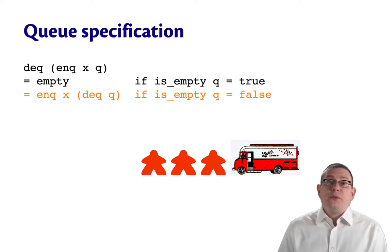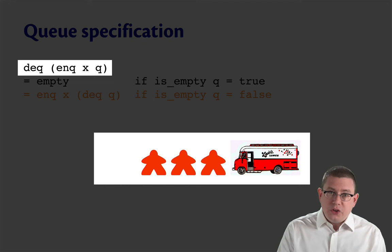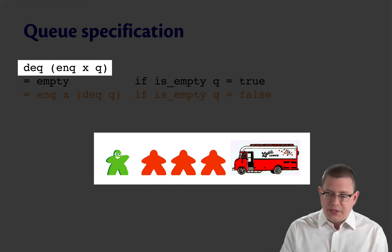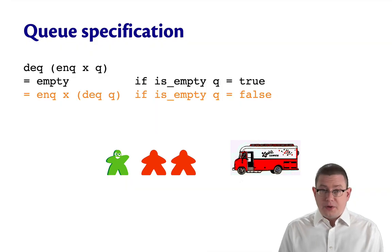But what if there's people in the queue already? So it's not empty. Then if we enqueue you, you're at the back of the line waiting for your food, and then we dequeue somebody, then we get this queue. So that's the result of the left-hand side of the equation here. Notice that there's two people in front of you, and you're at the end.